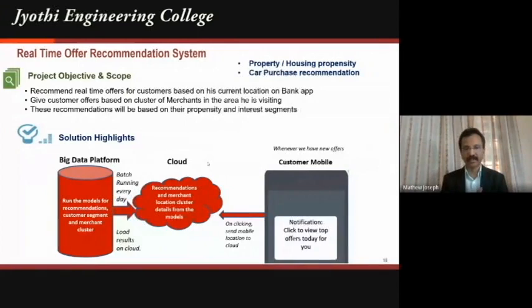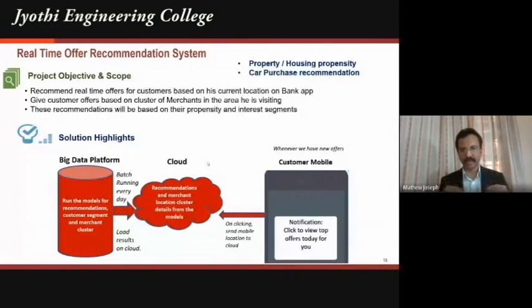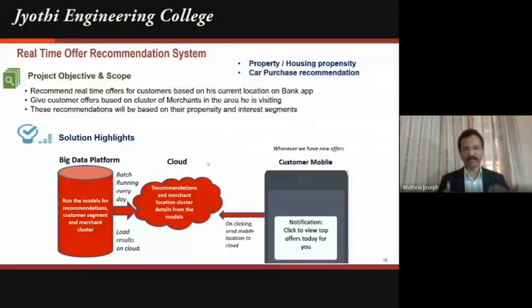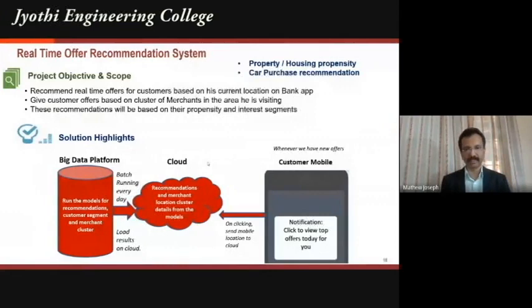The bank has analyzed all your data — social media behavior, purchase behavior, NLP-processed reviews and comments — and knows your credibility. With that, you can get a personal loan approved within two minutes instead of running to the bank for a week or a month. The bank is becoming your personal finance partner — not a sarkari office that ties its pens to the counter and treats you like a thief. That's a paradigm shift with the power of artificial intelligence.